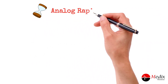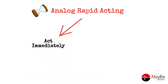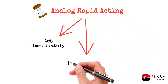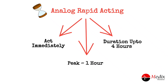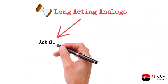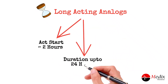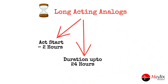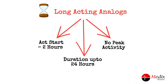Rapid acting analog insulins start to act immediately after injection, with peak action occurring within the first hour and a duration of up to 4 hours. Long acting analog insulin takes about 2 hours to start acting, with a duration of up to 24 hours. Long acting insulins are designed to act uniformly, so there is no peak activity as such.